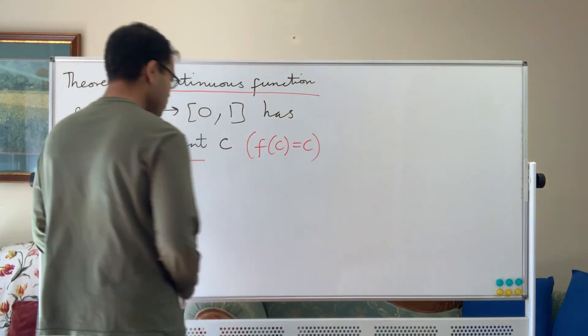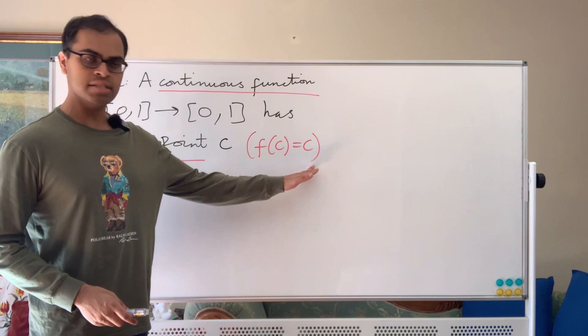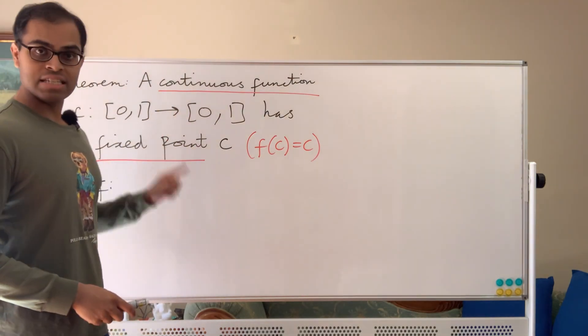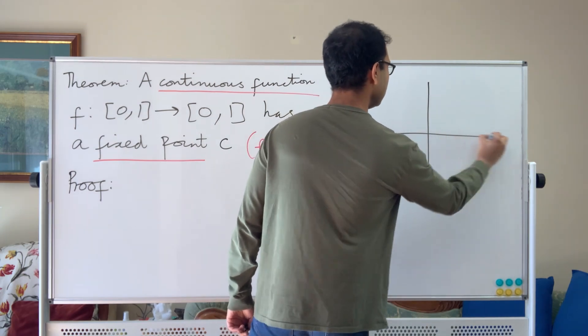The proof is going to find the number c in the interval [0,1] so f(c) equals c, and we're given our function is continuous. Let's draw a picture. Drawing a picture is always really helpful to get a feel for these things.